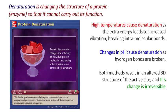Denaturation is the changing of the structure of a protein so that the protein cannot carry out its function. We typically focus on denaturation with enzymes, but any protein can be denatured. High temperatures cause denaturation because the extra energy leads to increased vibrations, breaking the intermolecular bonds holding them together in the secondary or tertiary structure. Changes in pH can also cause denaturation because any hydrogen bond is affected and broken — whether in secondary, tertiary, or quaternary structure. Both methods result in an altered three-dimensional structure of the protein. In an enzyme, that would affect the active site. Denaturation is completely irreversible.